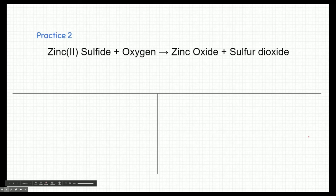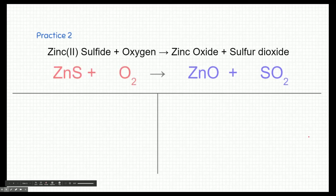Here's a practice: zinc-2-sulfide plus oxygen gives zinc oxide and sulfur dioxide. We need to write the different compounds. Zinc-2-sulfide — zinc with a plus-two charge and sulfur with a minus-two charge — gives one of each: ZnS. Oxygen is one of the special diatomic elements, so we write O2. Zinc oxide — zinc is plus two and oxygen is minus two — gives one zinc and one oxygen: ZnO. Lastly, sulfur dioxide is a covalent compound: one sulfur and two oxygens, SO2.